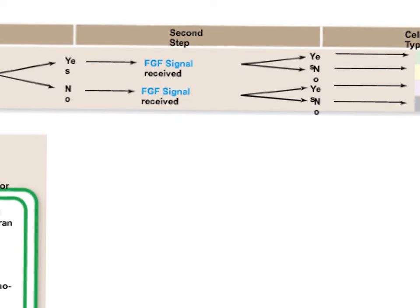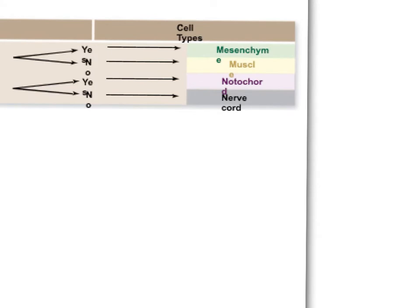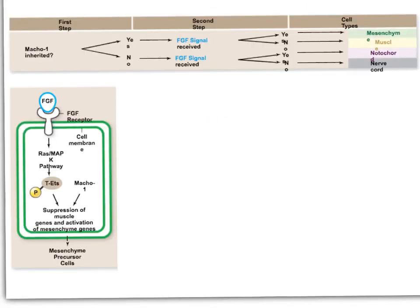Which path they go depends on the combination: whether they have the cytoplasmic determinant and receive the signal from the neighboring cell, or whether they have the cytoplasmic determinant but do not receive the signal from their neighbors. If the cytoplasmic determinant is present and they receive the signal from the neighboring cells, those cells will become mesenchymal precursor cells. If they have the cytoplasmic determinant but do not get the signal from their neighboring cells, then those cells will become muscle cell precursors.